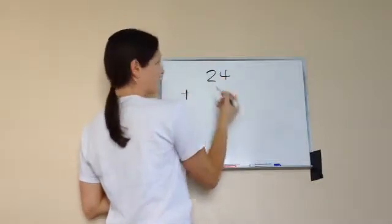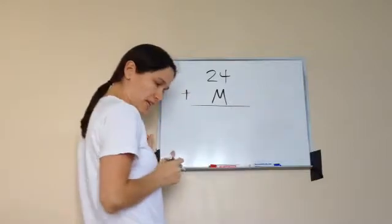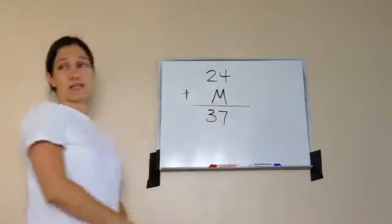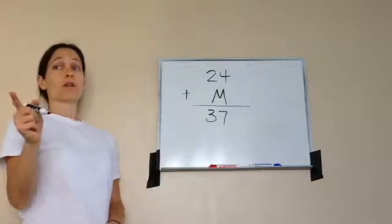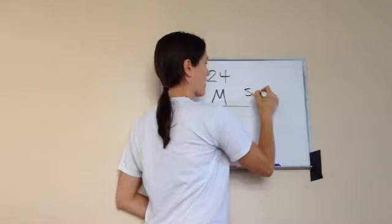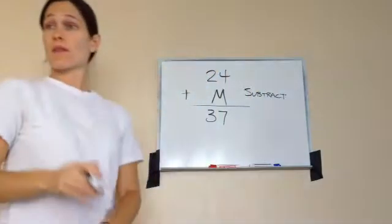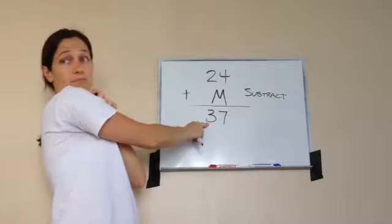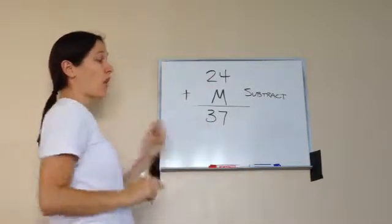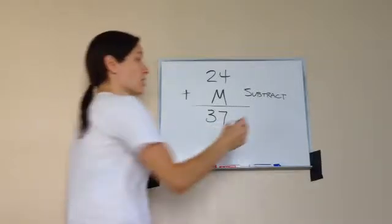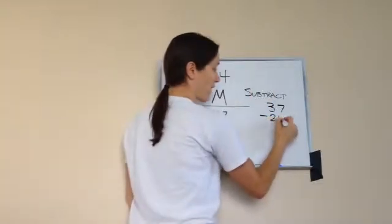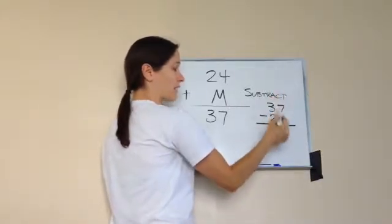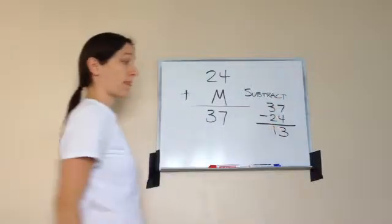24 plus m equals 37. What do we do when we have a missing addend? We subtract — subtract the two numbers we do have. This is our addend, and this is the sum. You always subtract with the biggest number on top. So we have 37 minus 24. Counting: 4 to 7 gives us 3, and 2 to 3 gives us 1, so our answer is 13.